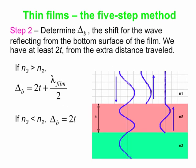Step 2: determine delta_b, the shift for the wave reflecting off the bottom surface. Automatically we get 2t, because this wave goes down through the film a distance t, reflects off the n2–n3 interface, and comes back through the film another distance t. Then we check whether n3 is bigger than n2: if so, there's a flip and an extra half wavelength, giving delta_b = 2t + λ_film/2. If n3 is less than n2, no flip, so delta_b = 2t. Those are the two options.